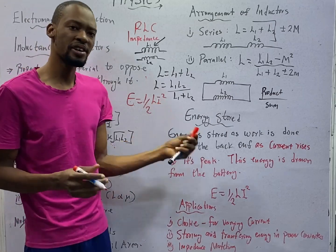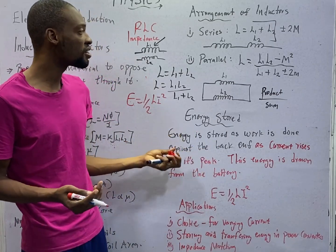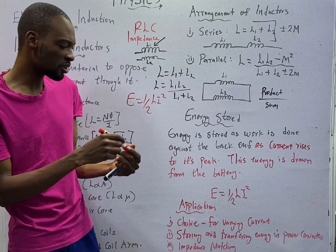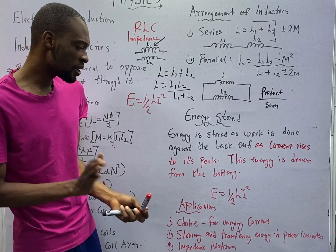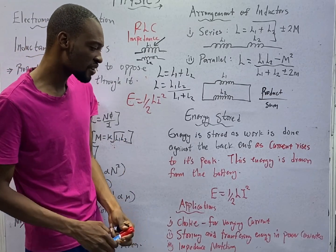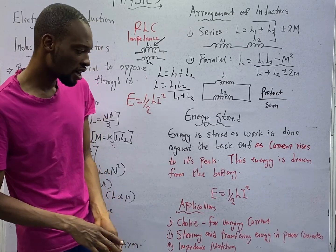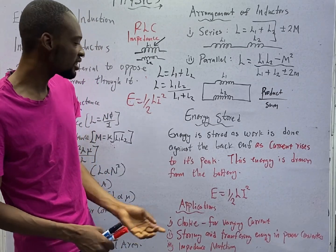So, energy stored in inductor is equal to 0.5 LI squared. Inductor, the current squared. It is very, very easy. Then, applications of inductors are choke varying currents, storing and transferring energy in power converters, then impedance matching.